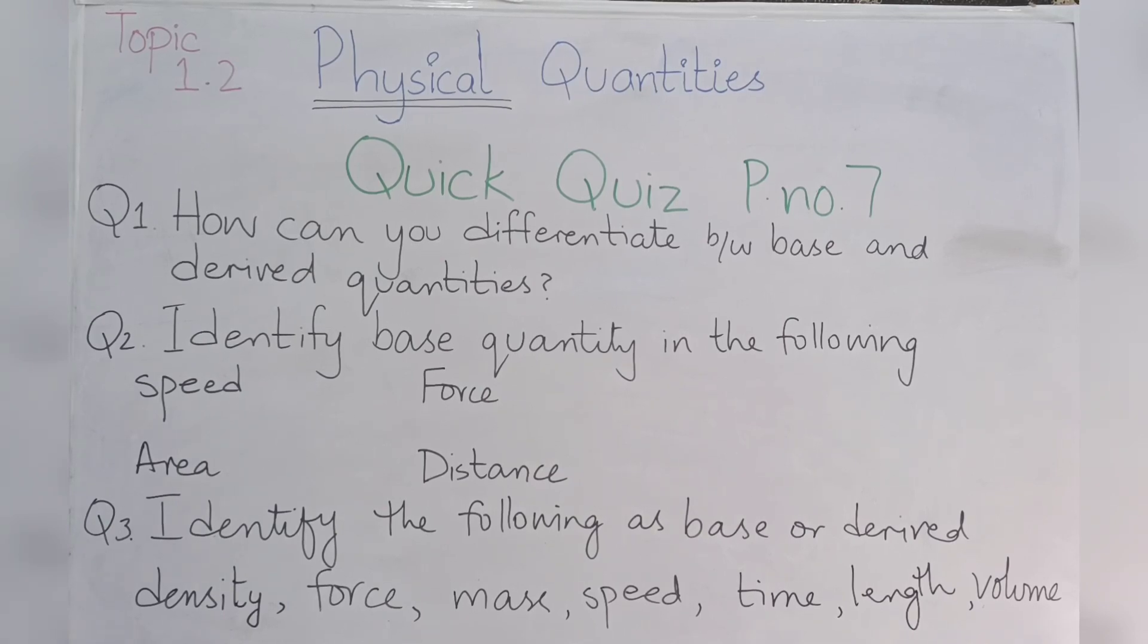Question number 1 is how can you differentiate between base and derived quantities? You can mark the answer on page number 5 where it's written in the pink box that base quantities are the quantities on the basis of which other quantities are expressed, and quantities that are expressed in terms of base quantities are called derived quantities.